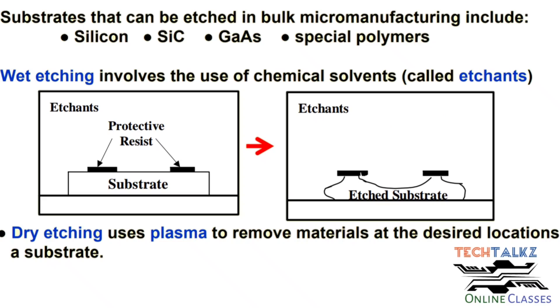The portion covered by the resist is protected, but etching goes into the side folds as well. It proceeds in all directions — this is called Isotropic Etching.